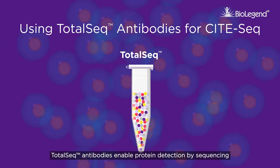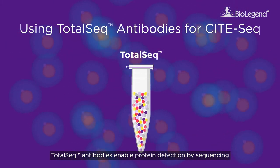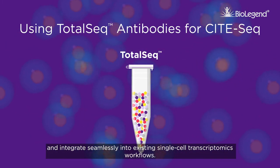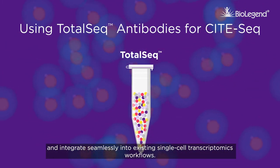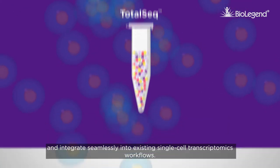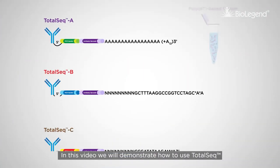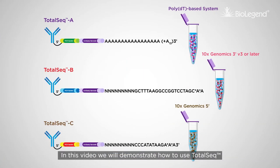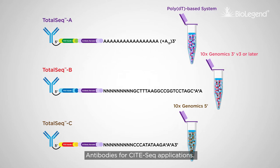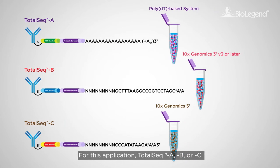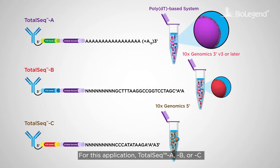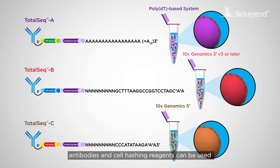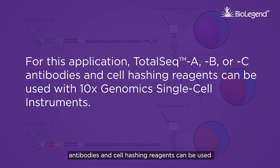TotalSeq antibodies enable protein detection by sequencing and integrate seamlessly into single-cell transcriptomics workflows. In this video, we will demonstrate how to use TotalSeq antibodies for SiteSeq applications. For this application, TotalSeq A, B, or C antibodies and cell hashing reagents can be used with 10x Genomics single-cell instruments.